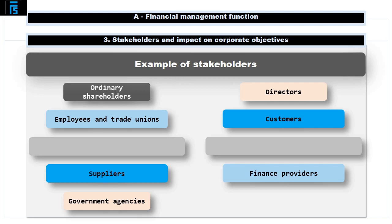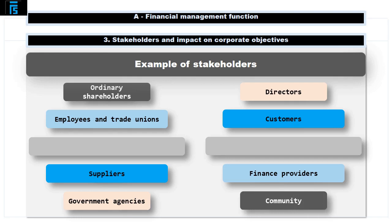Government agencies have many interests. They want to ensure that the organisation is following the relevant legislation such as tax, employment, and health and safety. The government also has an interest in the organisation's employment levels, encouraging these and motivating the organisation to increase its exports. The community at large is a broad stakeholder whose objective is that the organisation has a positive impact on its surrounding community and environment.